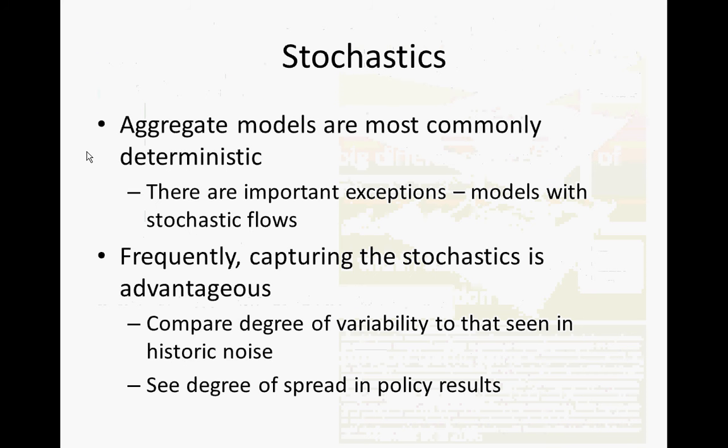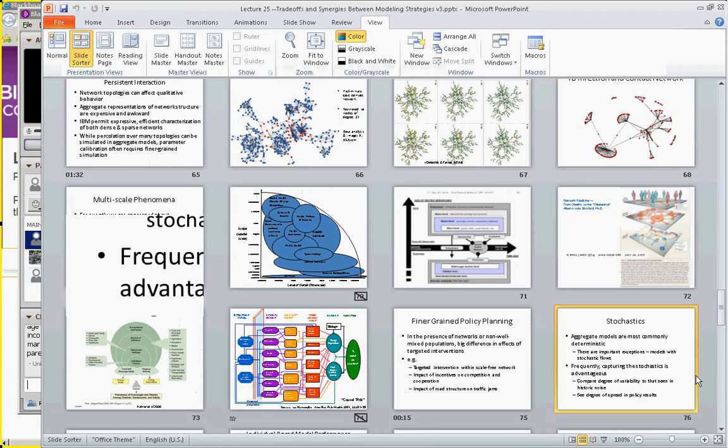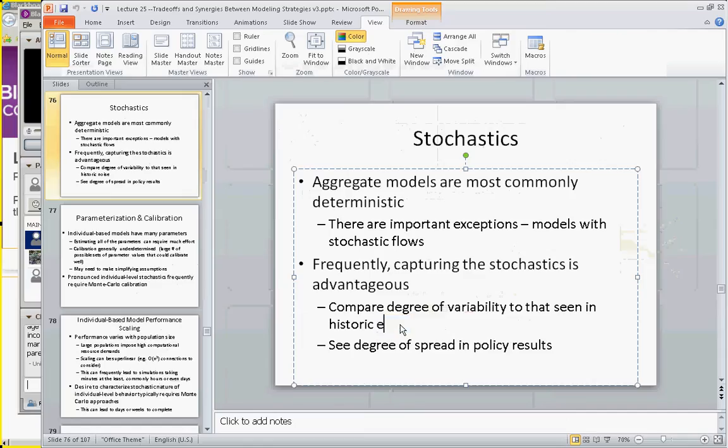In terms of stochastics, aggregate models are most commonly deterministic. You can build aggregate models in Vensim or AnyLogic with stochastic flows, but very commonly an aggregate model would be deterministic — and deterministic models are much easier to analyze. However, sometimes we want to capture stochastics to reason about variability seen in historic data. We might have data showing the number of individuals developing diabetes in different years with a lot of variability, and we may build a stochastic individual-level model to reproduce those patterns.